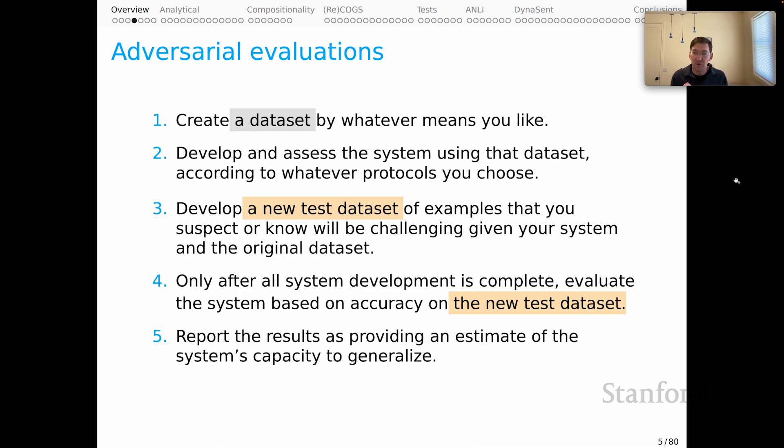This is the new piece, this contrast. We have our dataset that we use to create the system, especially for training. But then in step three, we have a new test dataset. And that plays a crucial role of now offering us an estimate of the system's capacity to generalize. And to the extent that we have created some hard and diverse new test sets in this way, we can probably gain increasing confidence that we are simulating what life will be like for the model if it is deployed.